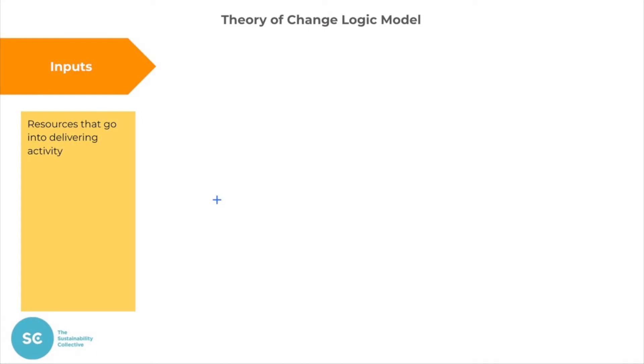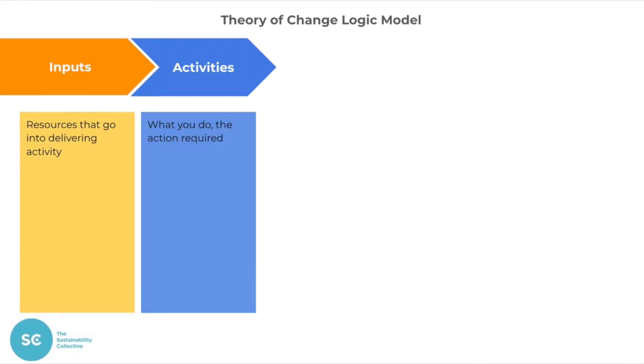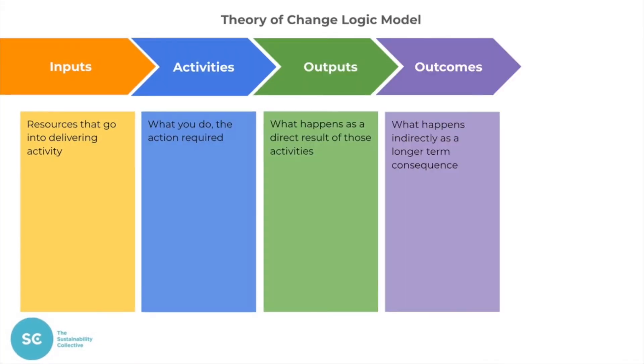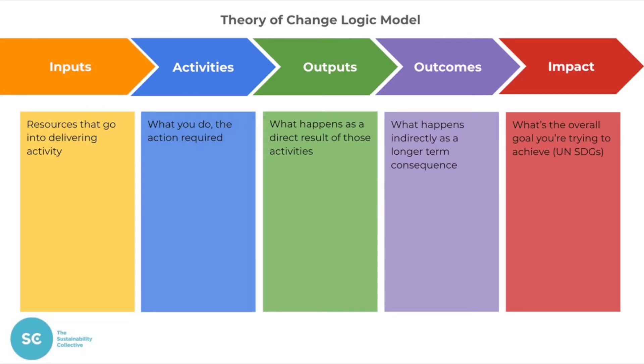The fundamental elements of a theory of change model are inputs, activities, outputs, outcomes, and impact — and that's where you put the goals.